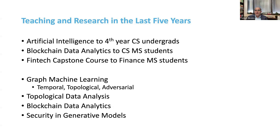In my research, I mainly work in graph machine learning. You can see the connections to blockchain data analytics because we do graph machine learning on blockchain data. We look at temporal, topological, and adversarial settings. Topological data analysis is a main line, coming from the works of mathematicians. So in a sense, we are doing mathematics and non-parametric statistics in computer science research.